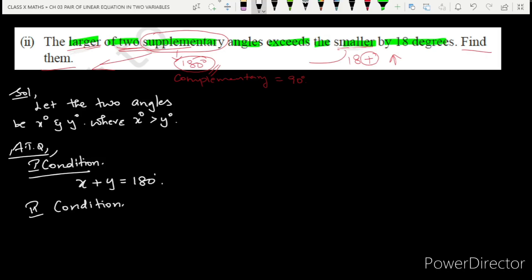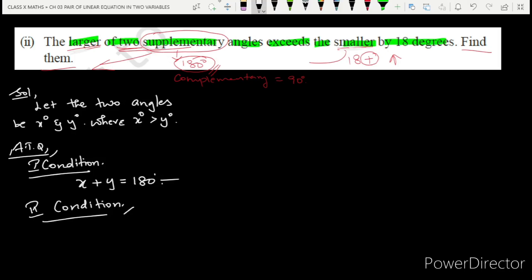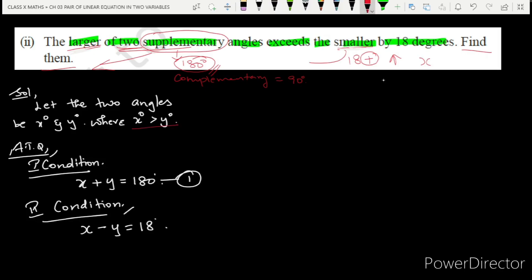Second condition: the larger of the two supplementary angles exceeds the smaller by 18 degrees. So if we subtract the smaller from the larger: x minus y = 18 degrees. This is equation 2.